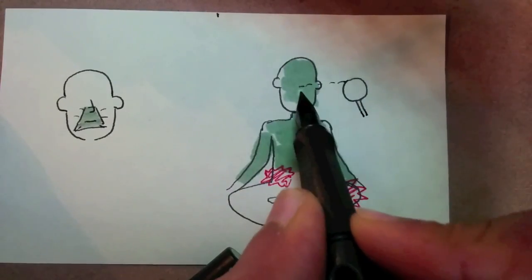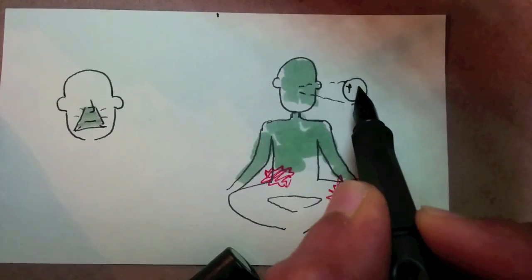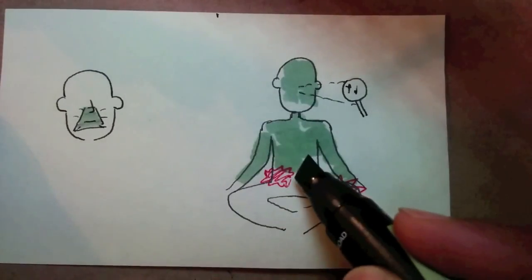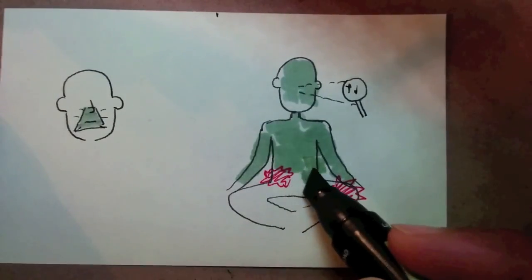Sometimes, if the sensations or your thoughts or your emotions get too strong for you to continue, you just bring your attention back to the breath in the nostril and upper lip area until you are ready to resume the practice.